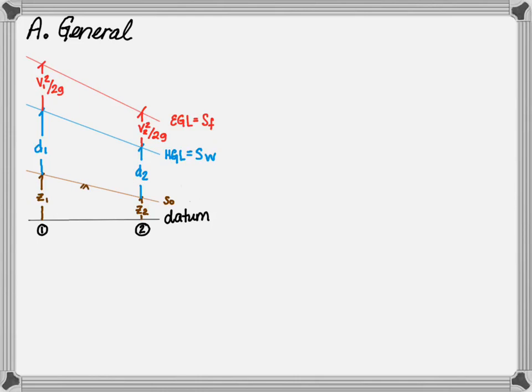As a review, in open channel hydraulics elevation is determined from the datum to the bed or bottom of the channel. The slope between points one and two is referred to as the bed slope, S naught. Next, you'll need the flow depth. This is measured as the depth above the bed. The slope of the water surface that is generated is also known as the hydraulic grade line.